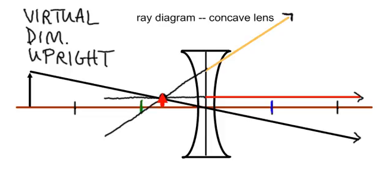And what you'll notice is that when you're dealing with a concave lens, no matter where the object is, as those light waves are passing through the lens, it's always going to be virtual, diminished, and upright, no matter how close or how far away you are from the lens.